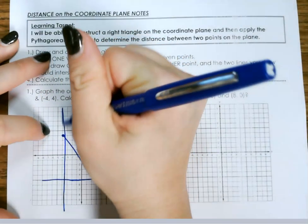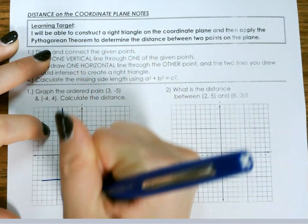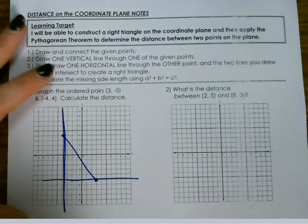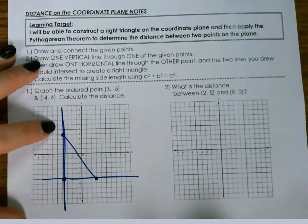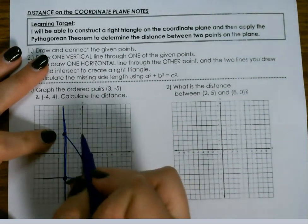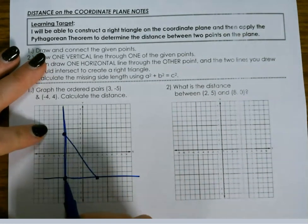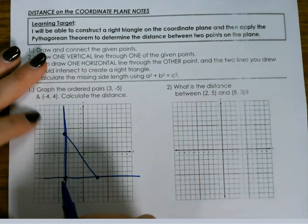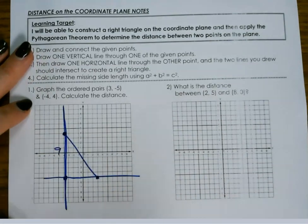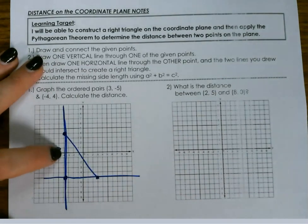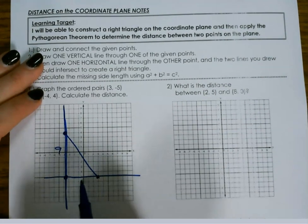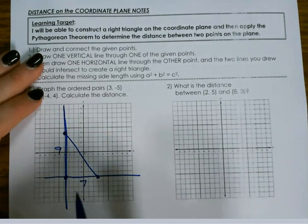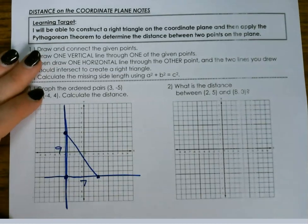So for our first one, we now calculate the distance between where they intersected. The way that I do this, this one is at 4, and this one is at 5. So 4 plus 5 is going to give me 9. You could also count each individual box. This one over here is at negative 4, and this one is at 3. So 4 plus 3 is 7. Again, you could go through and count 1, 2, 3, 4, 5, 6, 7 to get your boxes.